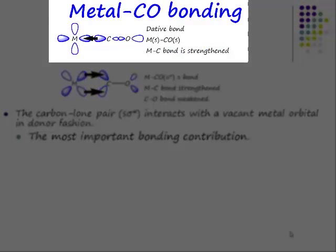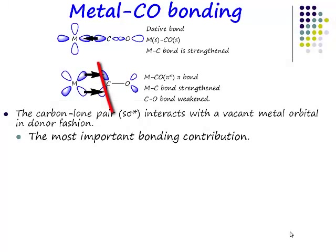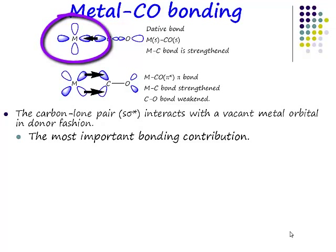This is the classic dative donor interaction. You take the HOMO of carbon monoxide, which is a lone pair on carbon, and donate it into a vacant orbital on the metal. Now if this metal was a classic octahedral metal like chromium hexacarbonyl — in chromium hexacarbonyl, what metal d-orbital is drawn there? It's going to be one of the EG set, because it's the EG set that points along the axes.